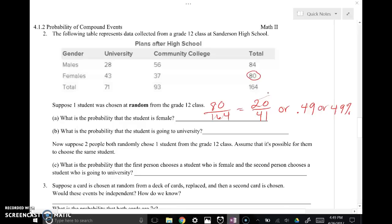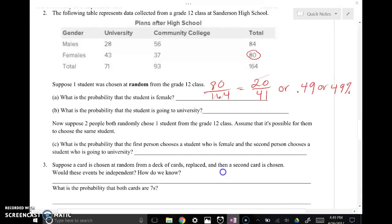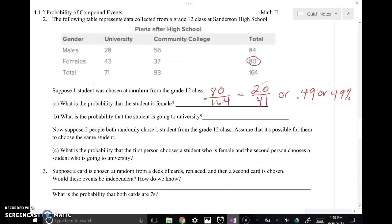20 over 41 or 0.49 or 49%, all three of these answers are acceptable. Okay, so now let's try to keep it moving here. What is the probability that the student is going to university? University, all right, so the number of kids that are going to a university are 71 total out of the 164 that were interviewed. So that's not going to reduce, but I can type that into my calculator and get 0.43 or 43% of the students that were interviewed are going to a university.